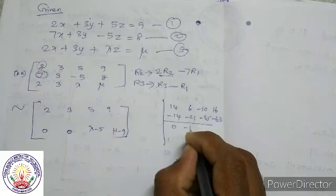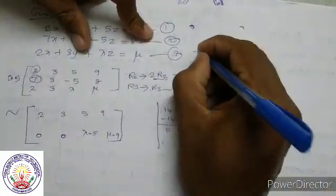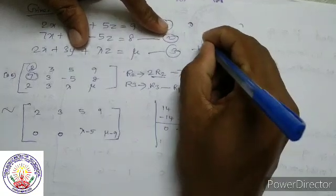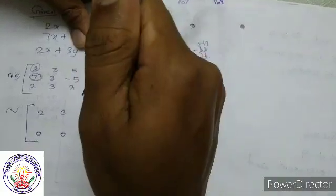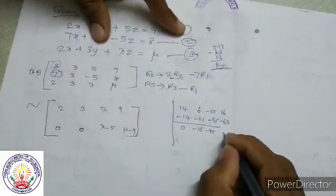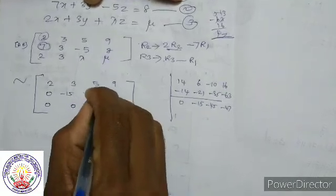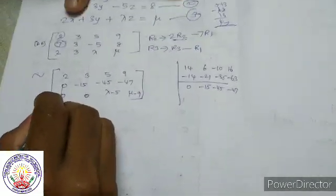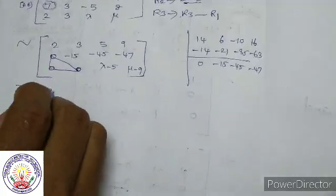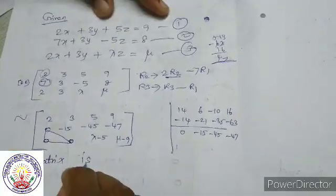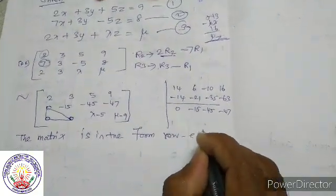After row operations, row 3 becomes: 0, minus 15, lambda minus 5, mu minus 9 approximately. The final row echelon form gives values: 0, minus 15, minus 45, minus 47 — so the matrix is in row echelon form.